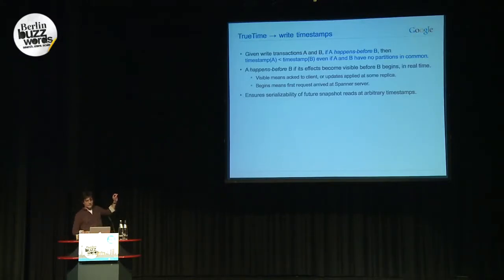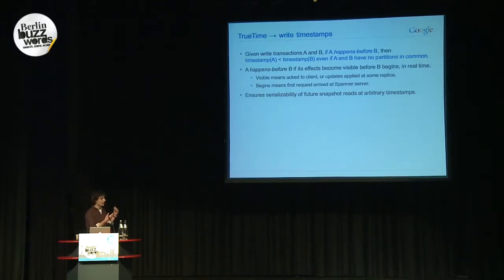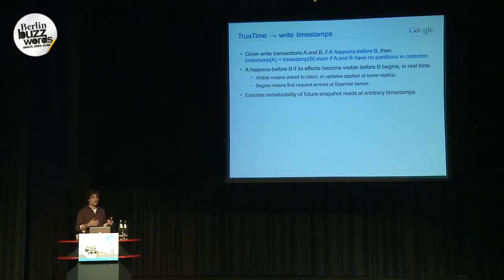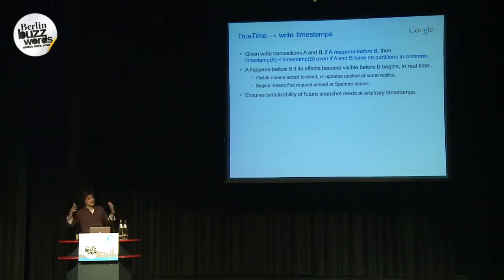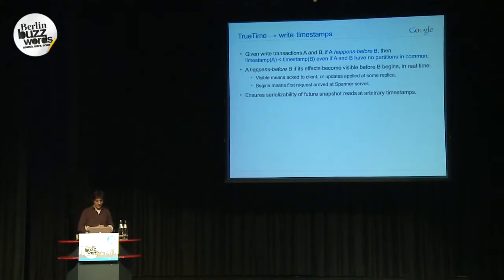This slide is a reminder of the invariant we're trying to get. Given two writes A and B, if A happens before B — meaning A finishes before B starts — then A should have a smaller timestamp than B. 'Finishes' is something you have to be careful about: it doesn't just mean acknowledged back to the client, because a transaction might become visible at some Paxos slave before it's been acknowledged back to the client. Transaction B might depend on A because it read from that slave and saw the outcome of A. So it's really about the moment at which anyone could see the effects of transaction A.